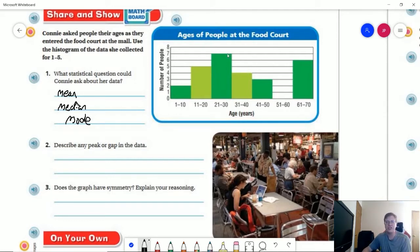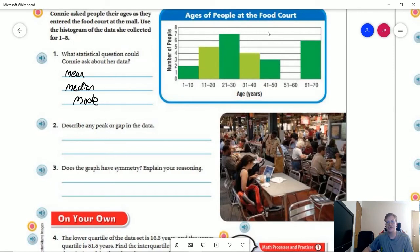Any peaks or gaps? We do have a peak here. We kind of sort of have a peak here. We have a definite gap - no one representing 51 to 60 years old. Does the graph have symmetry? Sort of. I would accept the argument that there is symmetry in this part, but not the entire graph.